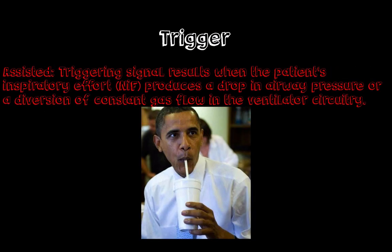The second type of trigger is an assisted trigger. An assisted trigger is a signal that results whenever a patient's inspiratory effort — which is negative inspiratory force — produces a drop in airway pressure or a diversion of constant gas flow in the ventilator circuitry. Here, as you see, the sucking motion is basically creating a negative inspiratory force. And whenever you do that, this will either drop the pressure in the circuit or divert flow in the circuit. Whenever flow or pressure is diverted in the circuit, the machine senses that and understands the patient is making an effort, so it delivers a breath. An assisted trigger is entirely governed by patient effort, done via a drop in flow or a drop in pressure in the circuit.